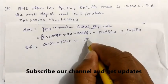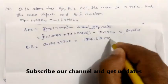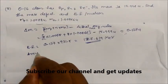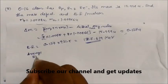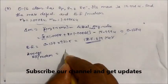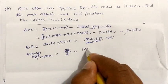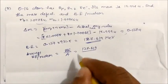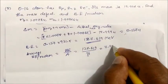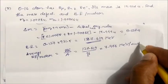On solving the binding energy comes to 127.619 MeV. Now, the average binding energy per nucleon is the total binding energy divided by the mass number A. So 127.619 MeV ÷ 16 = 7.976 MeV per nucleon. This is the answer for oxygen-16.